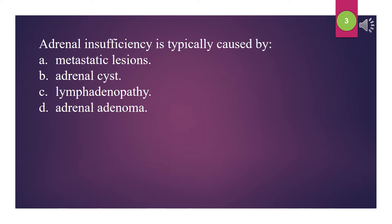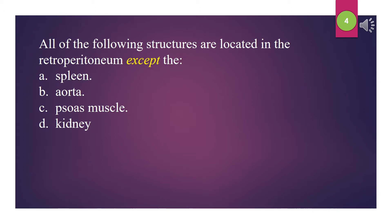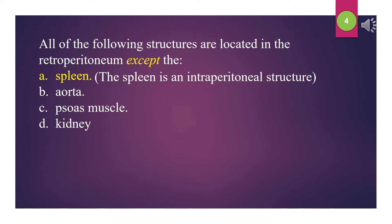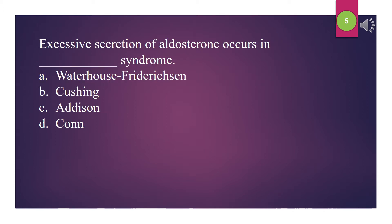Adrenal insufficiency is typically caused by: A. Metastatic lesions. B. Adrenal cyst. C. Lymphadenopathy. D. Adrenal adenoma. The answer is A: Metastatic lesions. All of the following structures are located in the retroperitoneum except: A. Spleen. B. Aorta. C. Psoas muscle. D. Kidney. The answer is A: Spleen.